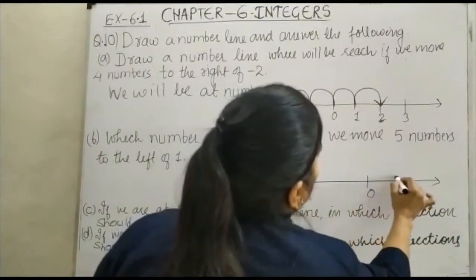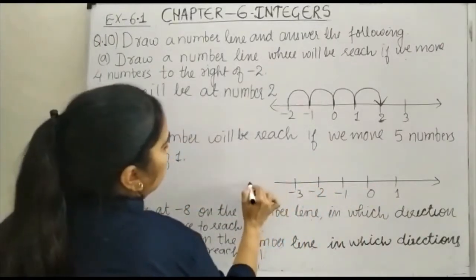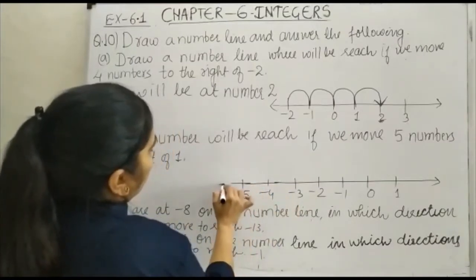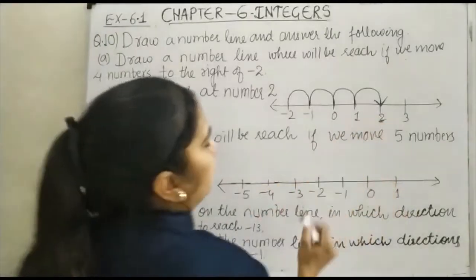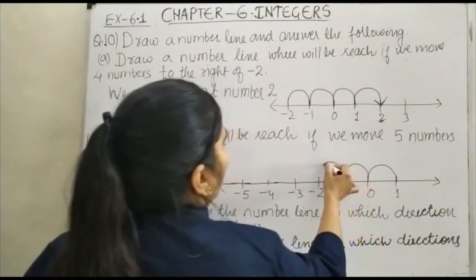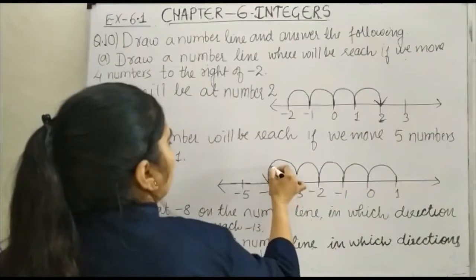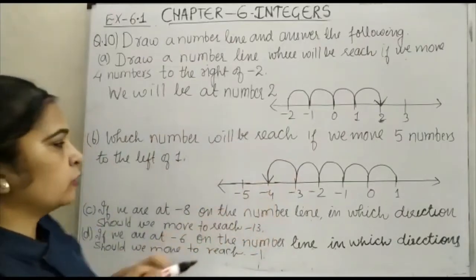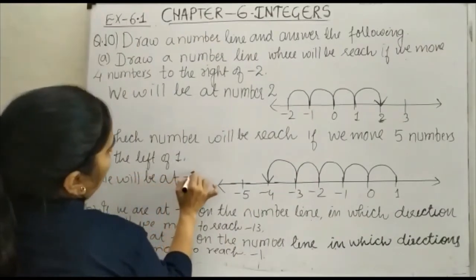On the number line we have 0, 1, minus 1, minus 2, minus 3 — we can extend them further to minus 4 and minus 5. Now we have to start from number 1, and move 1, 2, 3, 4, and 5 steps to the left. So you can see that when you move 5 numbers to the left of 1, we will be at minus 4.